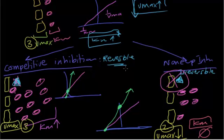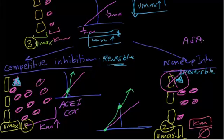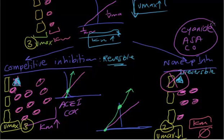Examples of competitive inhibitors include ACE inhibitors and COX inhibitors. Examples of non-competitive inhibitors include aspirin, carbon monoxide poisoning, and cyanide — these cause irreversible binding, you lose one enzyme, and the curve shifts up while the KM does not change. For competitive inhibitors, KM increases but Vmax stays normal because the enzyme count is the same.